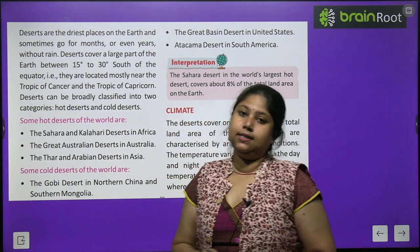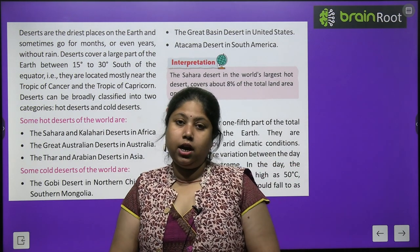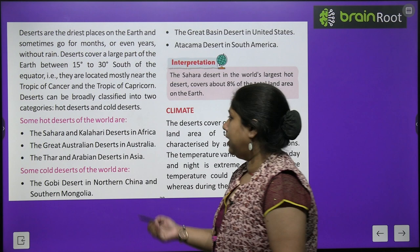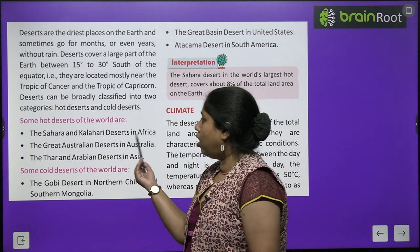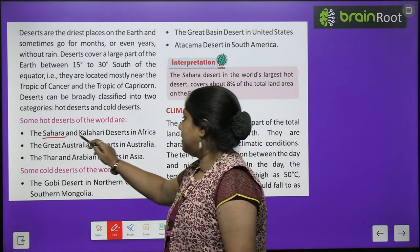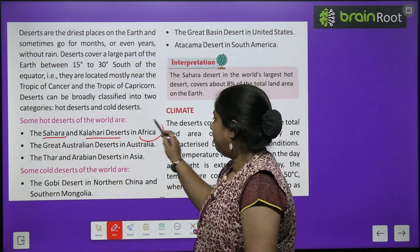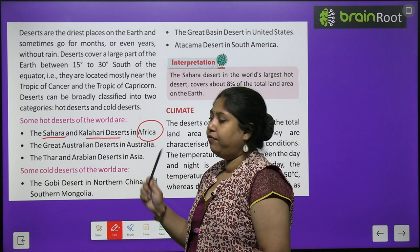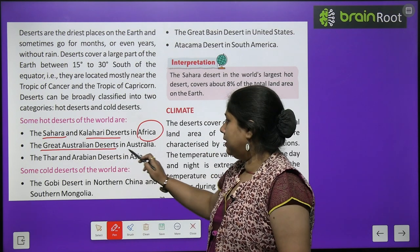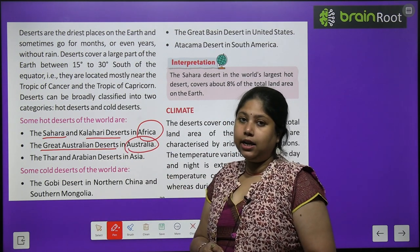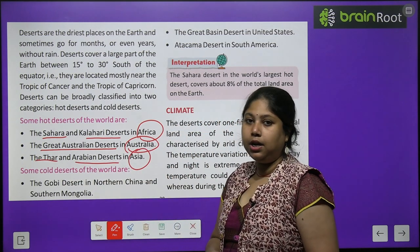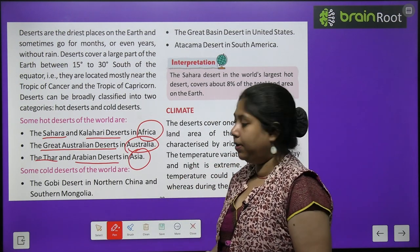Hot deserts are where it is always hot, and cold deserts are where the land is quite cold and dry. Some of the hot deserts of the world are: Kalahari desert and Sahara desert in Africa, the Great Australian desert in Australia, and the Thar and Arabian deserts in Asia. Thar desert is also found in India.